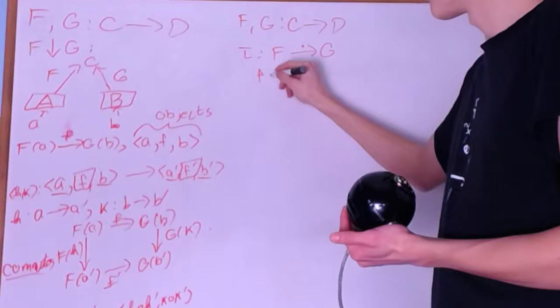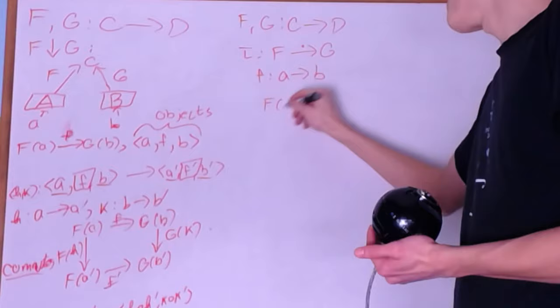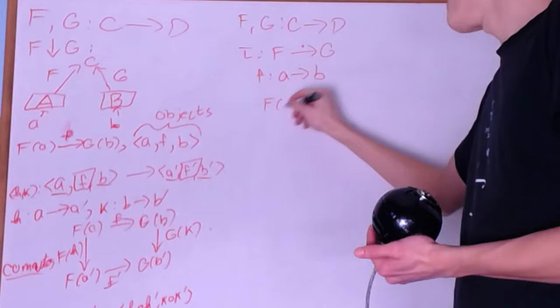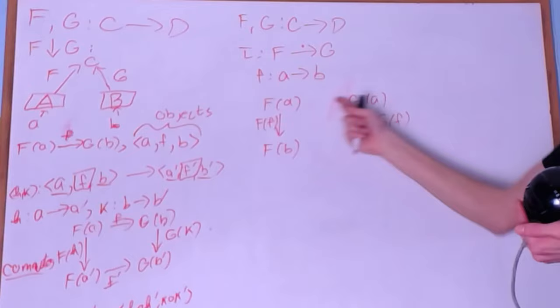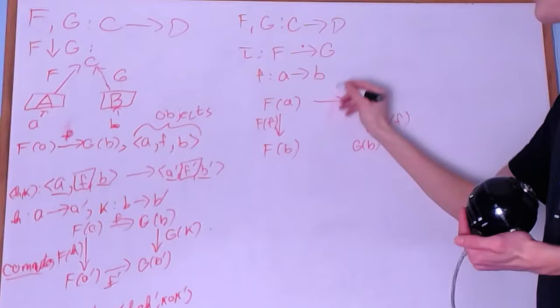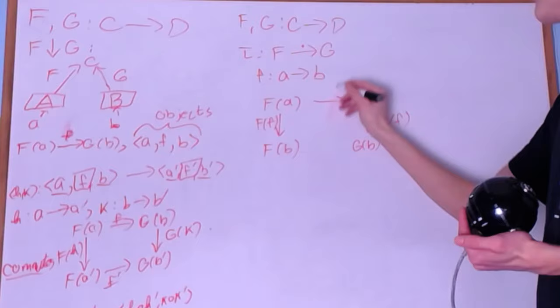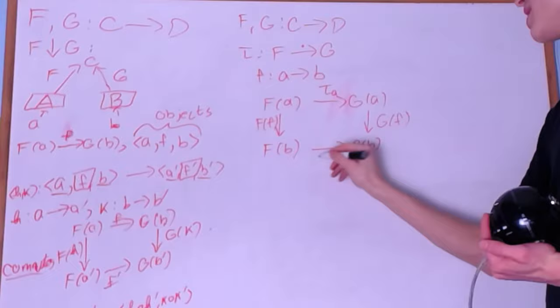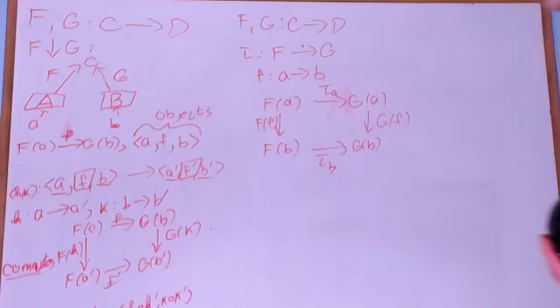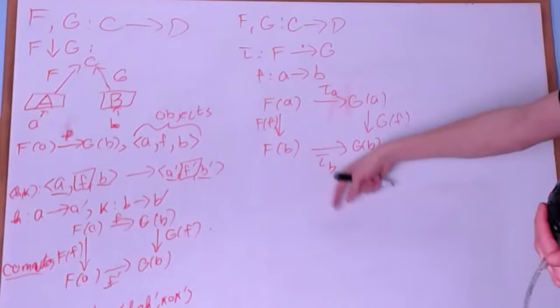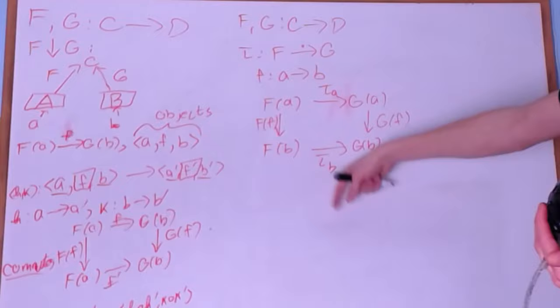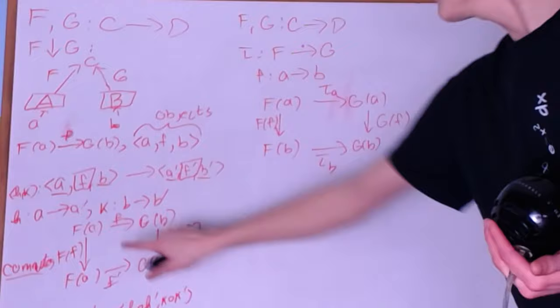A natural transformation between F and G can be expressed as a diagram. If I have an arrow f from A to B, I can go from F of A to F of B via F of f, and from G of A to G of B via G of f. From F of A to G of A, by the definition of a natural transformation, it's tau_A. And from F of B to G of B, it's tau_B. Compare this with the comma category diagram — it looks extremely similar. If we collapse A' and B' to be the same object as A and B, and replace H and K both with f, you can see these are almost the same diagram, where f corresponds to tau_A and f' corresponds to tau_B.